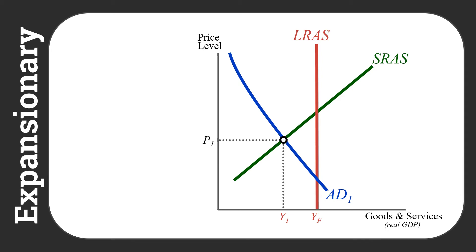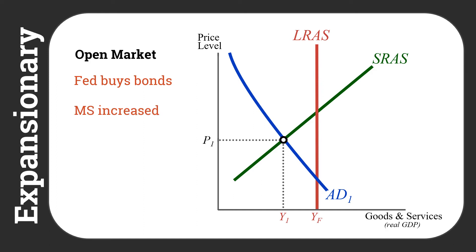So how does expansionary monetary policy impact our aggregate supply, aggregate demand graph? We can imagine a situation where we need to boost the economy forward, where equilibrium is below our potential output. We want to do expansionary monetary policy using open market operations — that's the traditional approach. The first step is that the Federal Reserve will buy bonds, which increases the money supply. As we showed on the loanable funds market, that increase in the money supply decreases the interest rate.